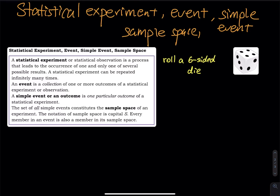An event is a collection of one or more outcomes of a statistical experiment or observation. So you roll a die — how many outcomes do you expect to see? I expect to see one, two, three, four, five, and six. This is a set of numbers. You can repeat this experiment infinitely many times. Every time you roll a die, you expect to get one of these six outcomes because there are six faces.